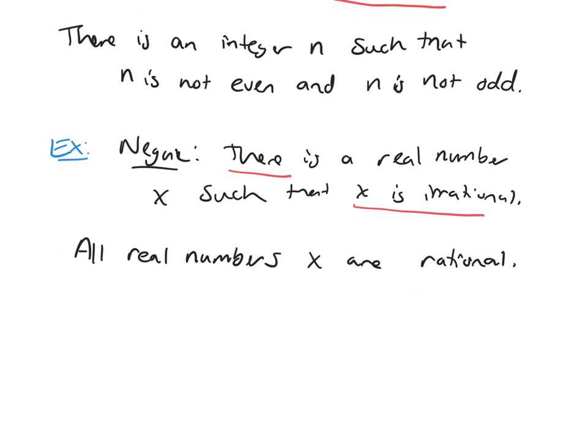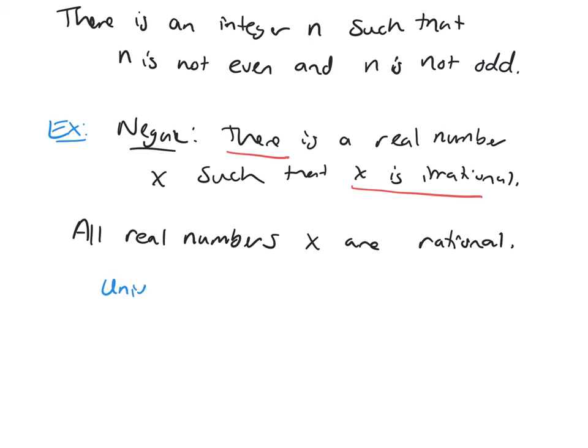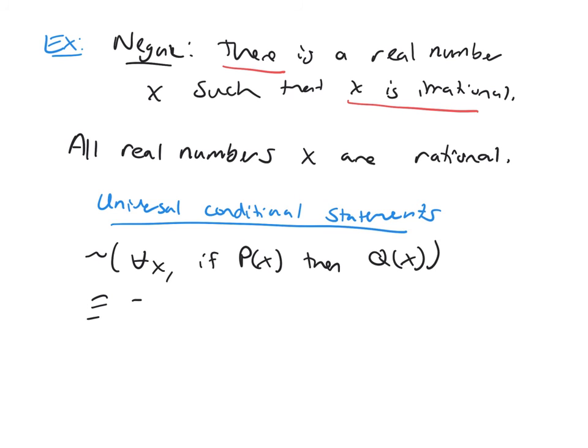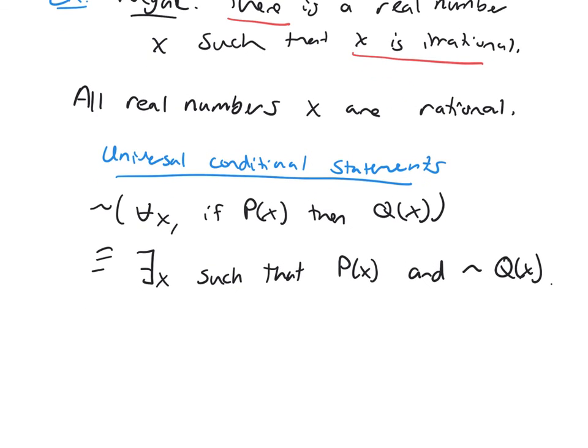Remember that we had universal conditional statements. When you negate 'for all x, if P(x) then Q(x)', it's a combination of a universal with conditional predicates. You negate it just like you did before with the quantifier, so it becomes 'there exists an x such that'—and then how do we negate conditional statements? Remember, there shouldn't be an if-then anymore. You change it to an and statement. You leave the first one alone and negate the second one. Remember, with these universal conditional statements, you can write the contrapositive, the converse, and the inverse as well, just like we did for regular conditional statements.